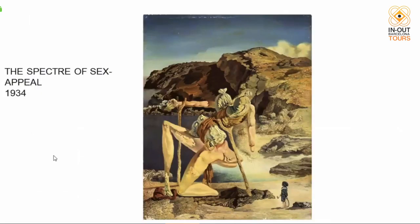His Surrealist phase lasted about ten years — from 1929, when he was accepted into the Surrealist circle, to 1939, when he was kicked out. The paintings from the 1930s represent Dalí at his prime. Unfortunately, most of them are scattered all over the world, so the museum doesn't have many. One of the only paintings from this period here is 'The Spectre of Sex Appeal,' from 1934.